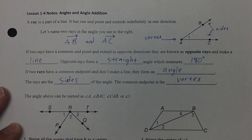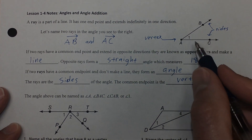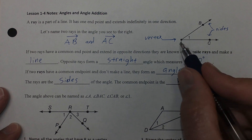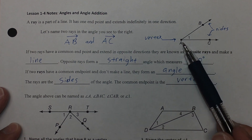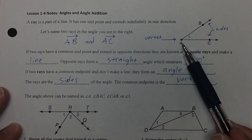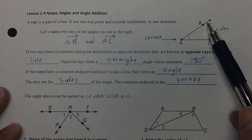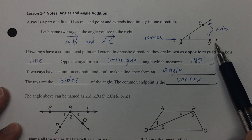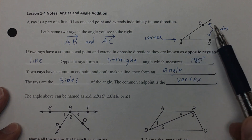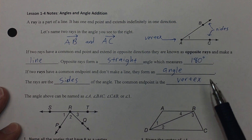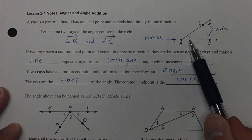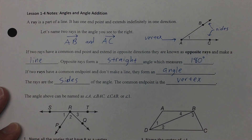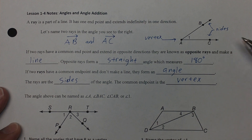The angle above can be named angle A because the vertex is point A. It can also be called other names such as angle BAC, or the other way around, angle CAB. Or it can be simply known as angle 1 because there is a 1 inside of the angle. So four different ways you could call this angle.